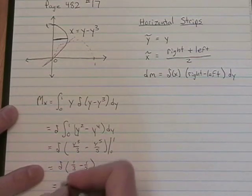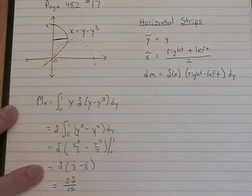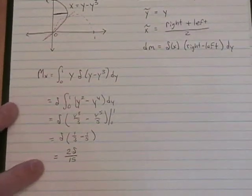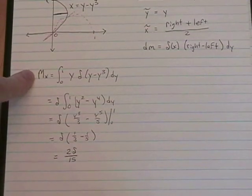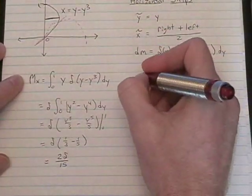So, this is 2 delta over 15. Moment about the x-axis. I'm going to go ahead and do the moment about the y-axis over here.